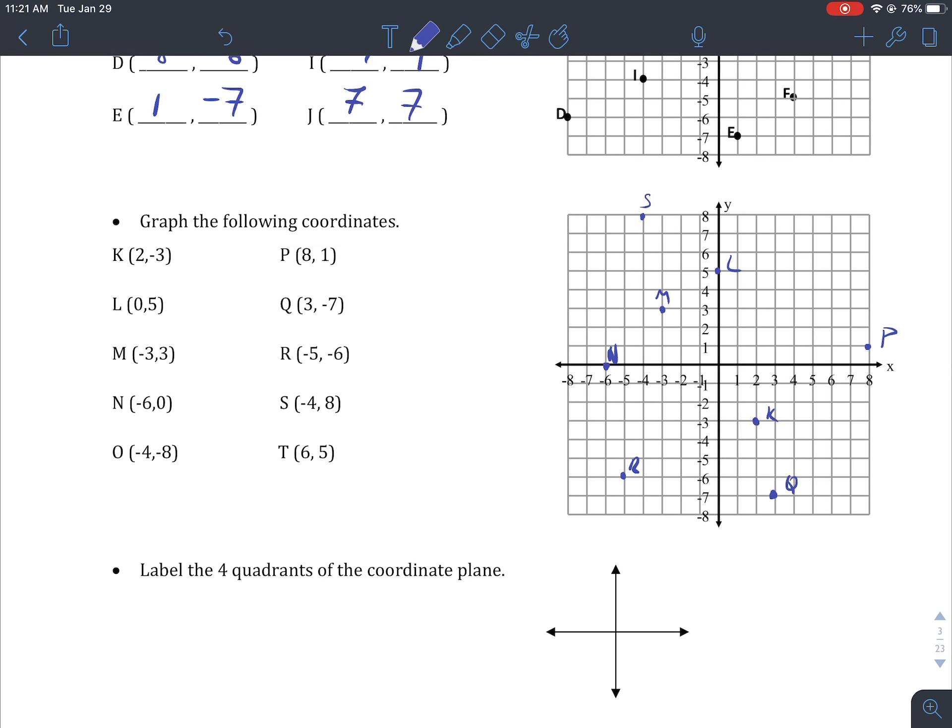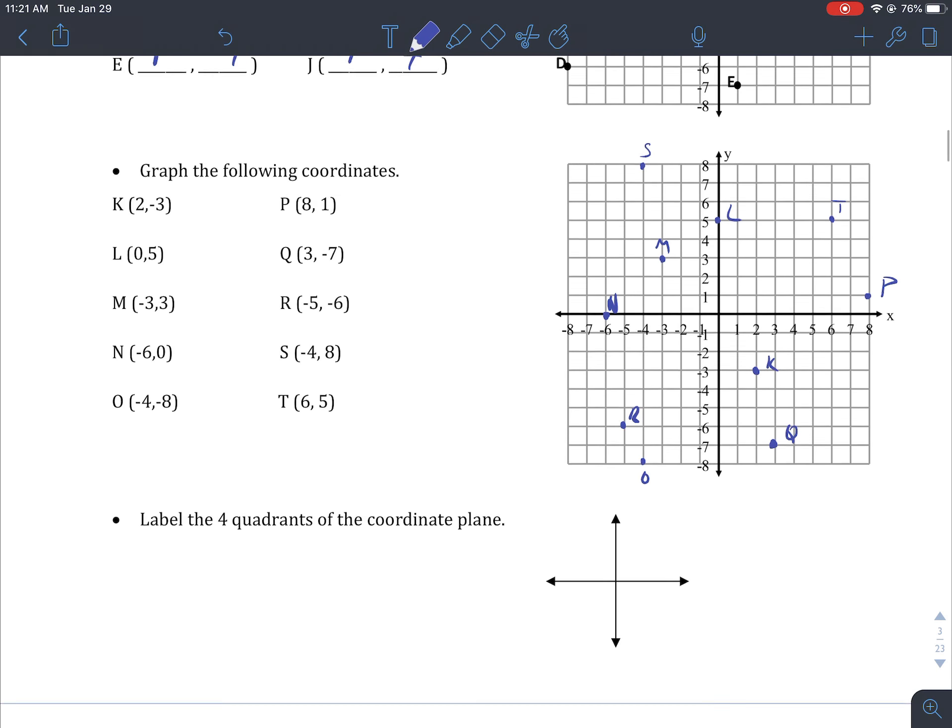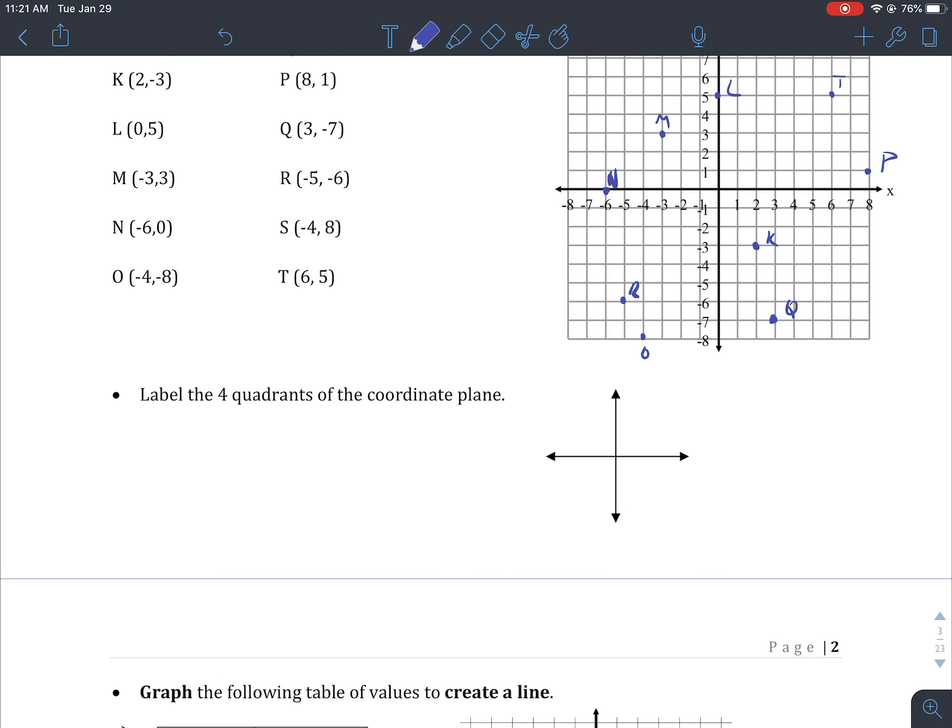S, negative four, eight. O, negative four, negative eight. So four left, eight down. And the last one is T, six, five. So six right, five up. And there are all of my points plotted on that grid.